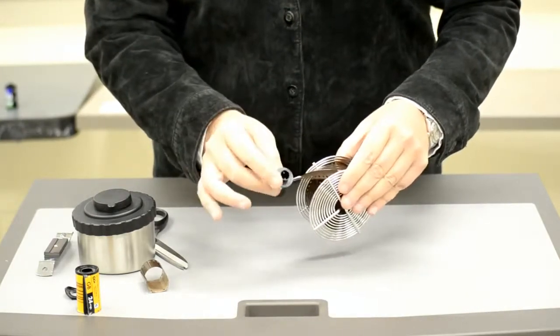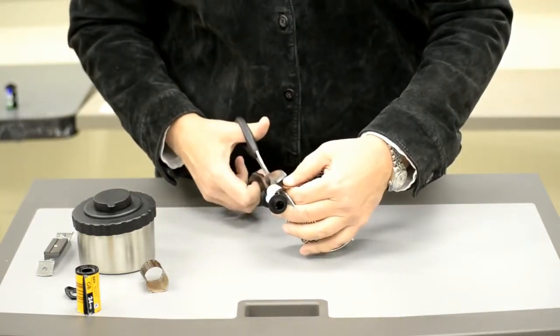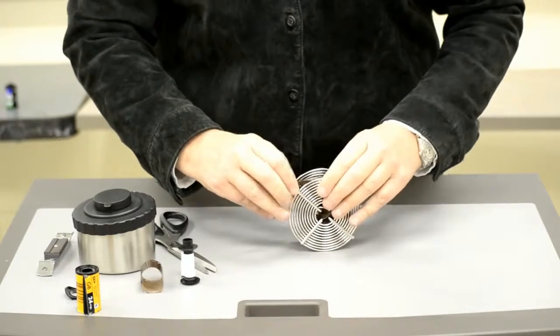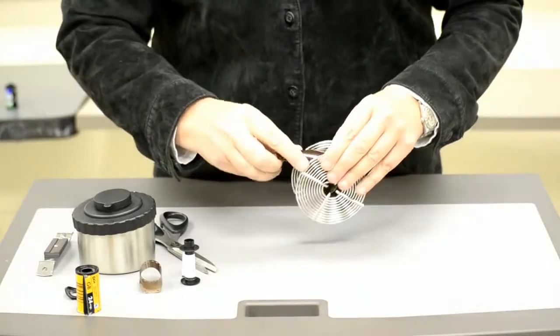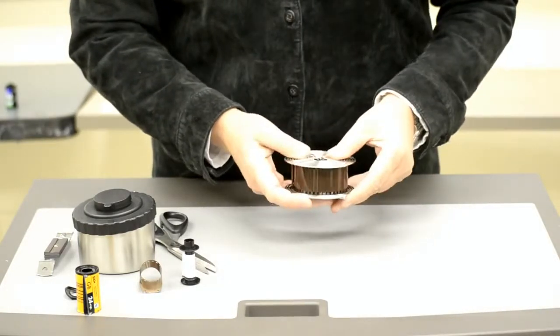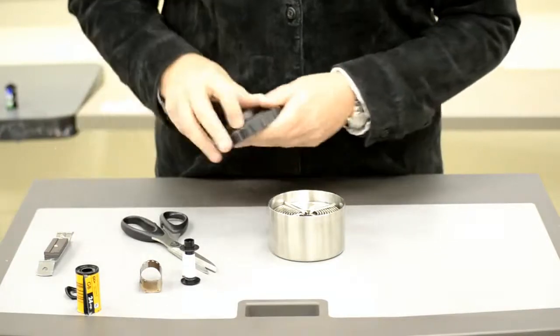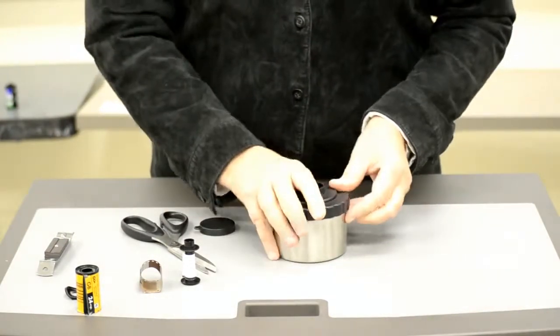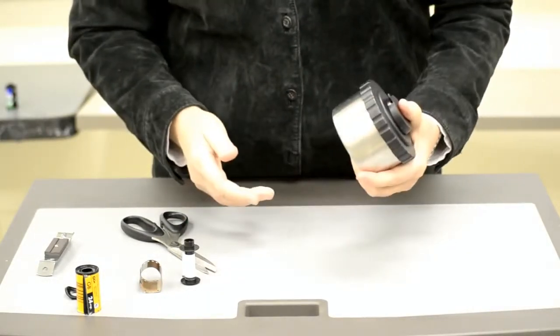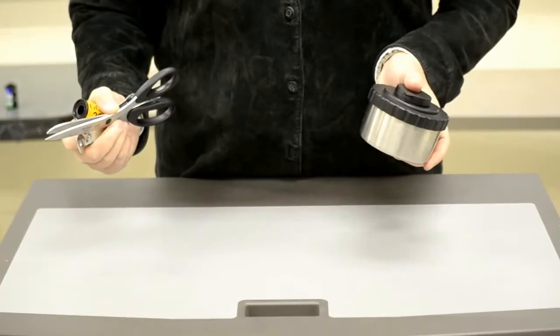At the very end, you get to the spool itself, and you want to cut that off or peel it off. If you cut slowly, you won't cut yourself. Place your film reel into the light-tight tank, put the lid on top, and remove yourself, your tank, your lid, all of your trash from your darkroom out to the processing area.